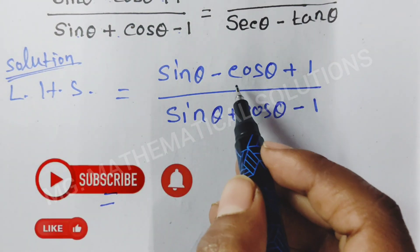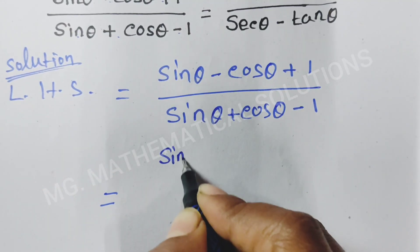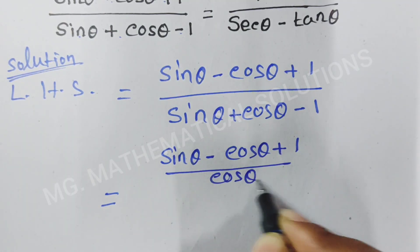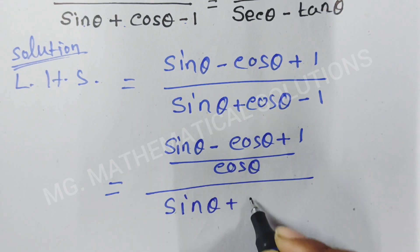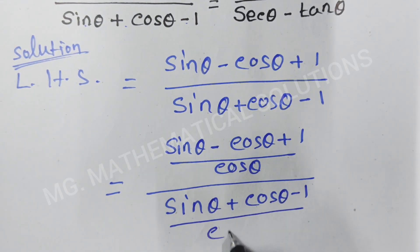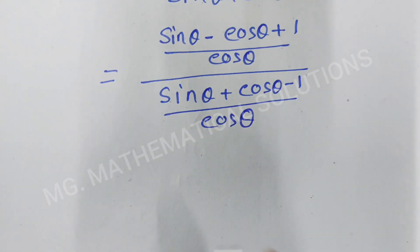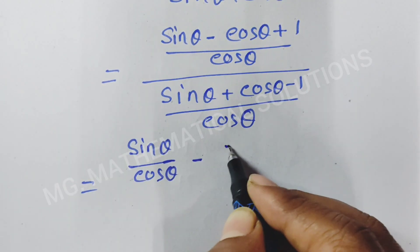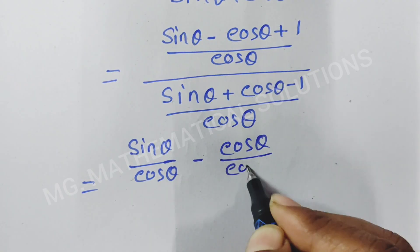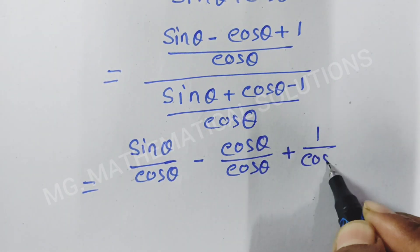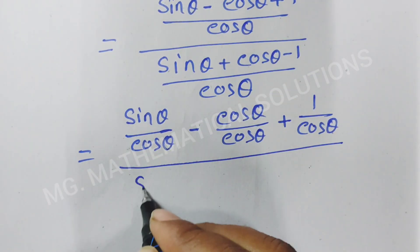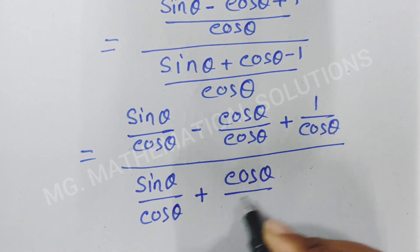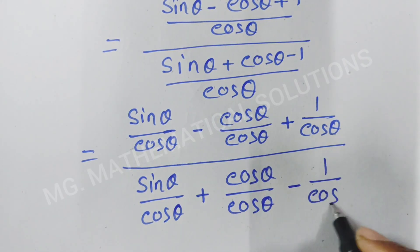We divide the numerator and the denominator by cos θ. So, sin θ minus cos θ plus 1 by cos θ, over sin θ plus cos θ minus 1 by cos θ. This gives us sin θ by cos θ minus cos θ by cos θ plus 1 by cos θ, over sin θ by cos θ plus cos θ by cos θ minus 1 by cos θ.